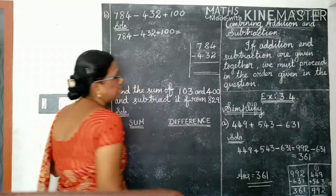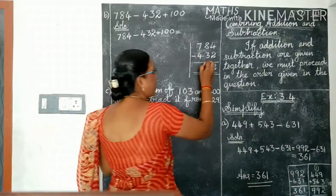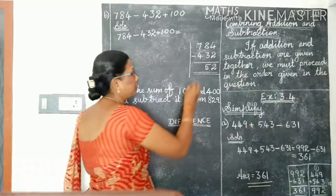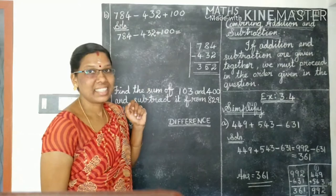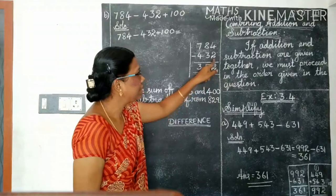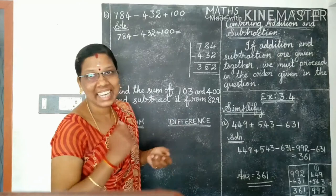784 minus 432. Now subtract. 4 minus 2 is 2. 8 minus 3 is 5. 7 minus 4 is 3. So the answer is 352. Do you know to check the answer is right or not? We can check it. If you add this 2 number, then you can get the answer this. 2 plus 2 is 4. 5 plus 3 is 8. 4 plus 3 is 7. So the answer is correct.